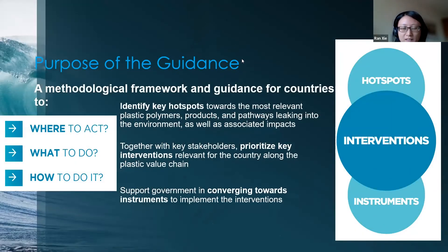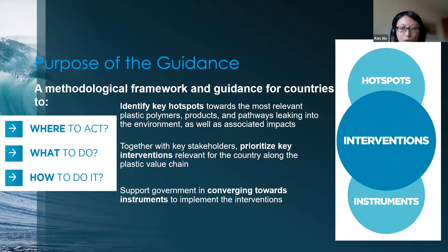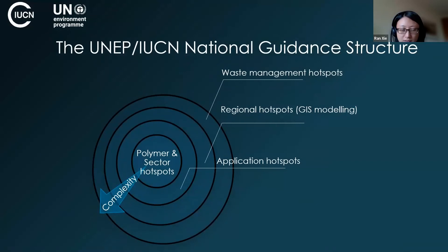Just to remind participants of the purpose of the guidance — most of you may already have background knowledge of the UNEP/IUCN guidance. This guidance aims to provide a methodology to support countries, regions, or cities to identify key hotspots in terms of plastic polymers, applications, and pathways linking to the environment. It can also help identify associated interventions and instruments to address those hotspots, answering three questions: where along the plastic value chain to take action, what actions to take, and how to take them.